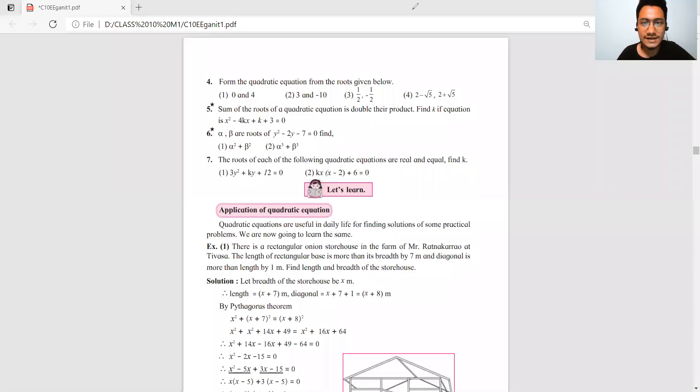Hello everyone, welcome back to my channel. In this lecture we discuss the next question of quadratic equations. Question number 5: the sum of roots of a quadratic equation, alpha plus beta, is double the product, which means alpha plus beta equals 2 times alpha into beta.